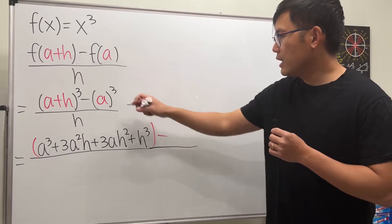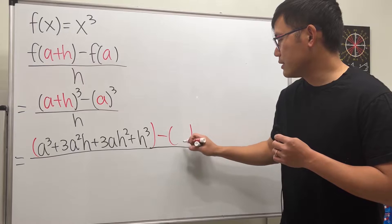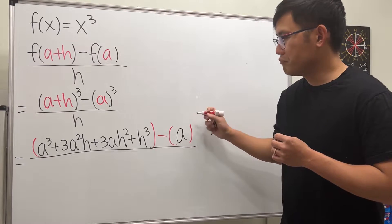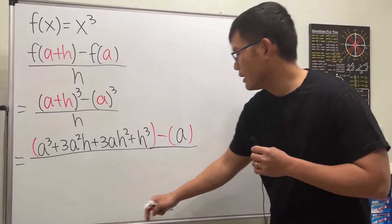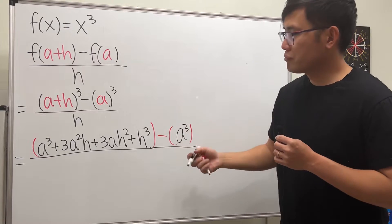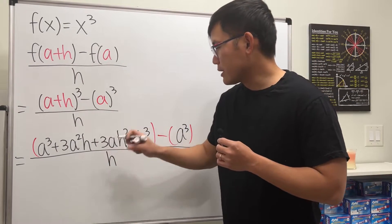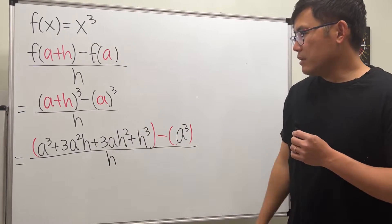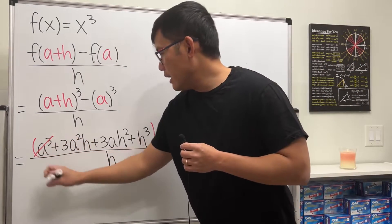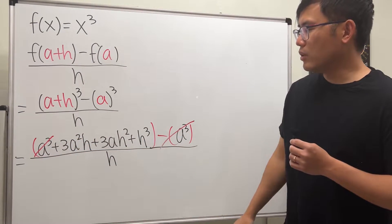Then we subtract f(a), which is just a to the third power — so it's minus a³. And of course we still have the h on the bottom. Now, this a³ and that a³ cancel each other out.